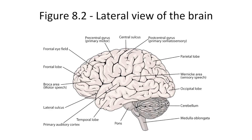This is figure 8.2, which is a lateral view of the brain. Wernicke's area is right here, and recall that this is the superior temporal gyrus.